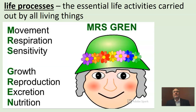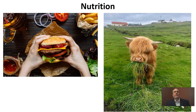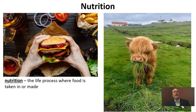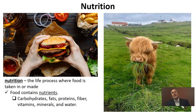So remember, life processes are those essential activities carried out by all living things. All living things have to engage in each one of these life processes — they can't miss a single one. When we look at nutrition, it's a life process where food is taken in, or if you're a plant, where food is made. Nutrition is about eating. When we eat, the things we eat contain nutrients — things like carbohydrates, fats, proteins, fiber, vitamins, and water. All of those are materials we need to take in for survival.